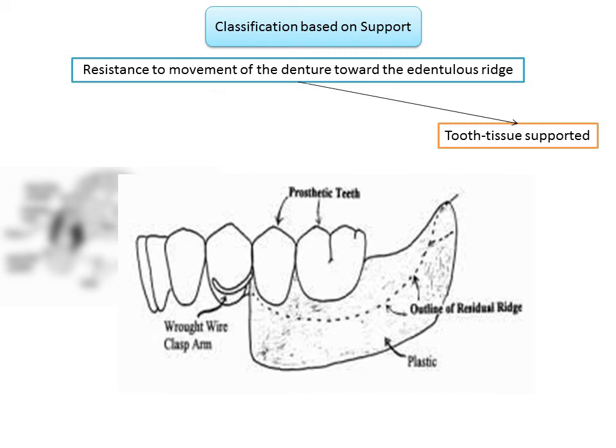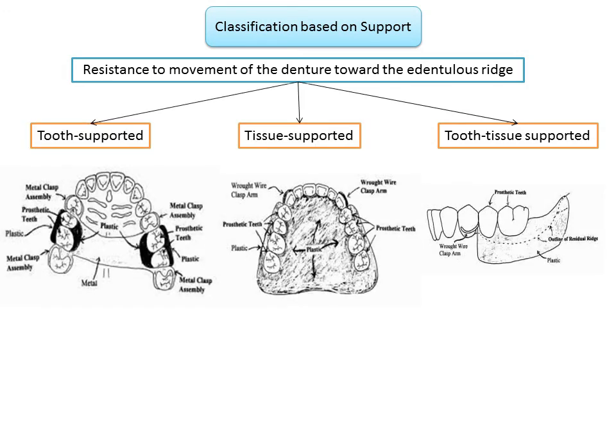The third type is the tooth-tissue supported RPD. This is supported at one end by natural teeth, which essentially do not move, and at the other end by the denture-bearing tissues — the mucosa overlying bone — which moves because of mucosal resiliency. So it is a combination of the tooth-supported and tissue-supported RPD.